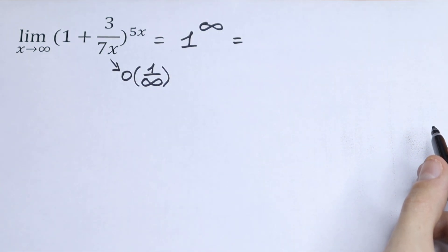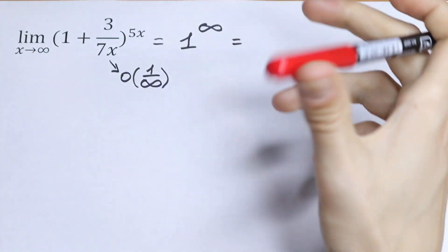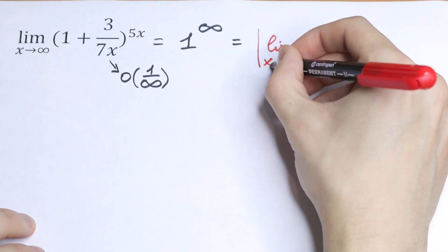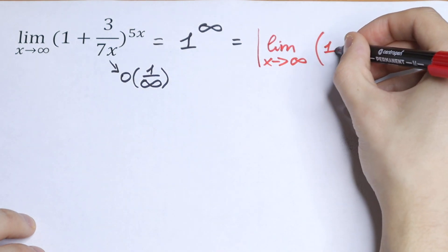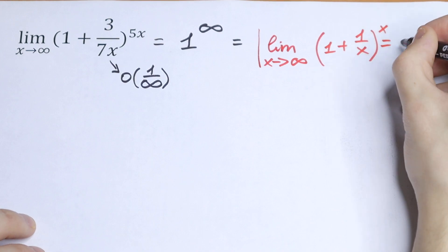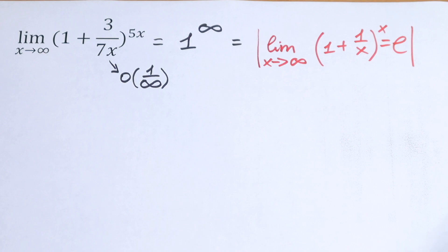We know that the limit, I'll write this limit right here using red pen. So we will have the limit as x approaches to infinity of the function 1 plus 1 over x to the power of x will be equal to e. So this is a classic limit, a table limit.